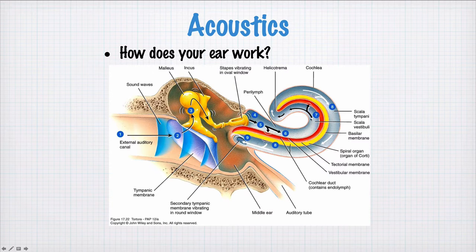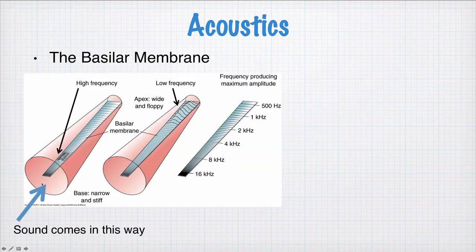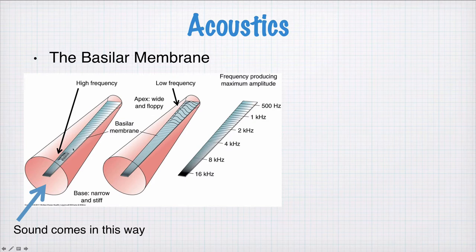If we unroll this and look at the structure of the basilar membrane, it's something like this. Where the sound comes in, the basilar membrane is narrow and it's stiff. As you go along the basilar membrane to the other end, it's wider and looser. Now if you imagine this is like a harp, each of these black lines might represent a string. The longer strings with lower tension have a lower frequency. If you look at the equations for the frequency of modes, the lowest modes with n equals 1 will have a lower frequency at this end and a higher frequency at the other end.